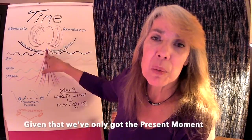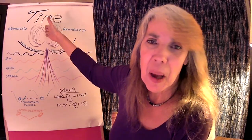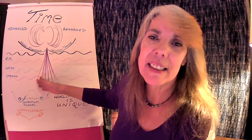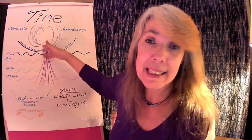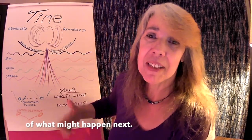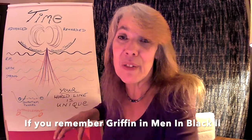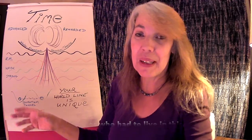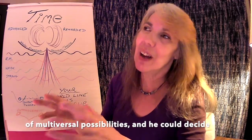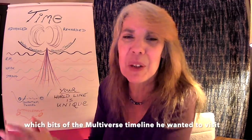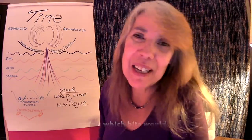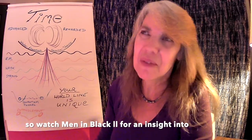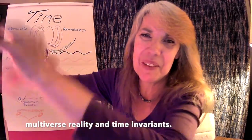Given that we've got the present moment to work with in terms of time, I've got this cascade here that represents all the various options — the probabilities that we'd fall into, the possibilities of what's going to happen next. If you've ever seen Men in Black 3, and you remember a little character called Griffin, he was a character who actually existed in this sci-fi zone within a multiverse, and he could identify which bits of the multiverse he wanted to visit and which bits were coming up next, which was sometimes a bit scary. That film is great if you want more exposure to the concept of multiverse reality and time invariance.